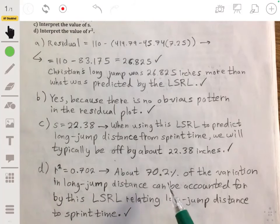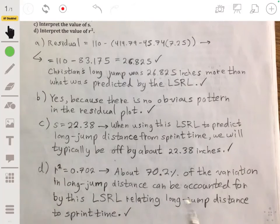But in this case, it's about 70.2% and that's pretty good. It's not super strong, it's definitely not weak. So we can basically say this is a pretty reliable regression line that we can use to make predictions when making guesses about long jump distance.